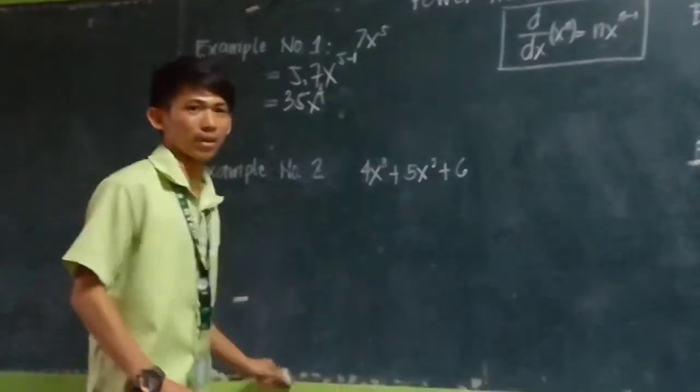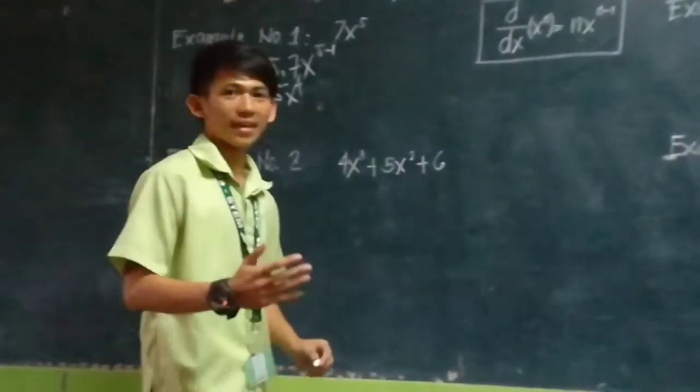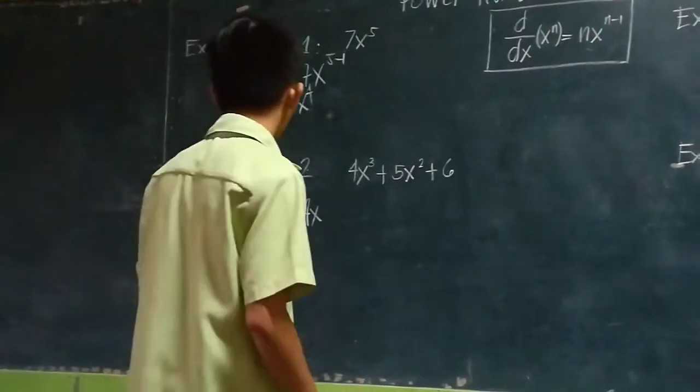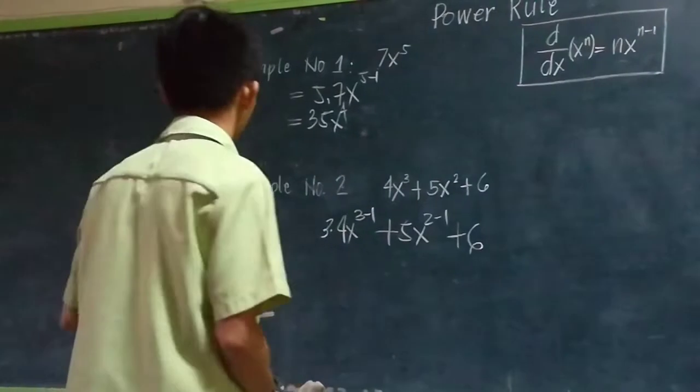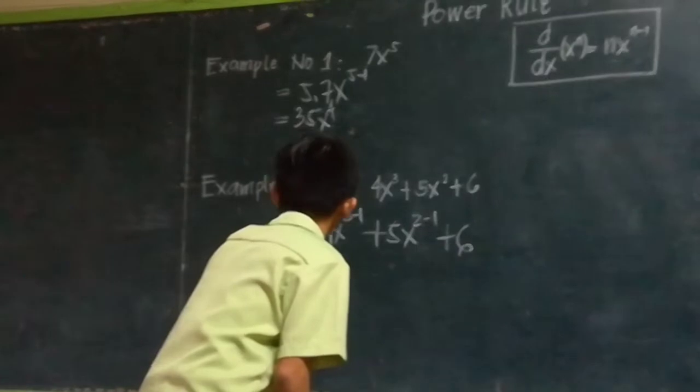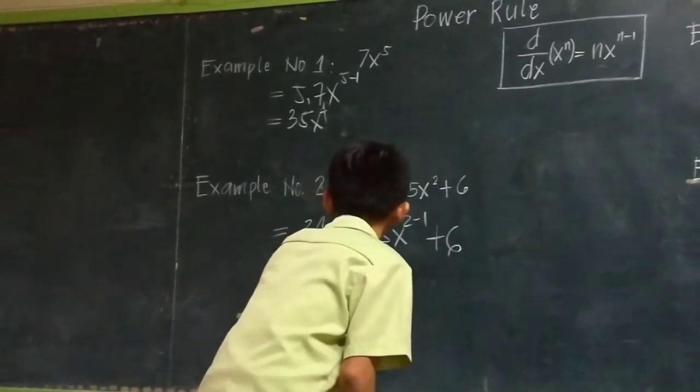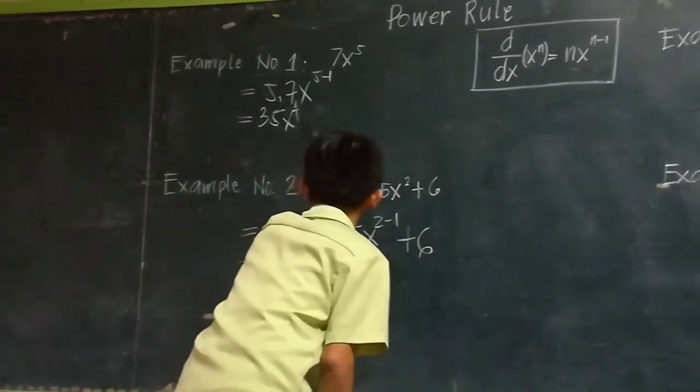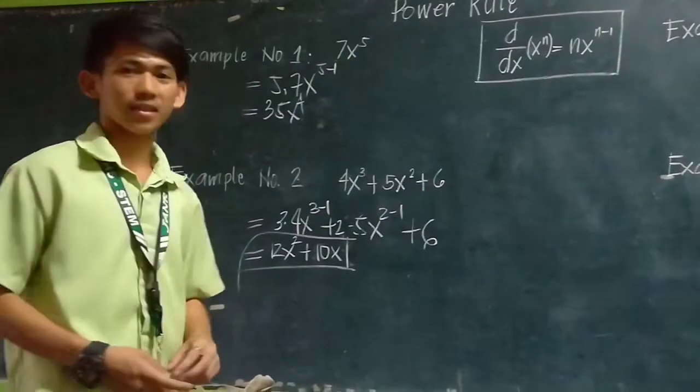Here is example number 2: 4x³ + 5x² + 6. Again, let's go back to the first step. Take down the exponent 3, multiply it by the coefficient 4x, then decrease 1 from the exponent. Take down the exponent 2, multiply by 5x, then decrease 1 from the exponent. So the answer for number 2 is 12x² + 10x.